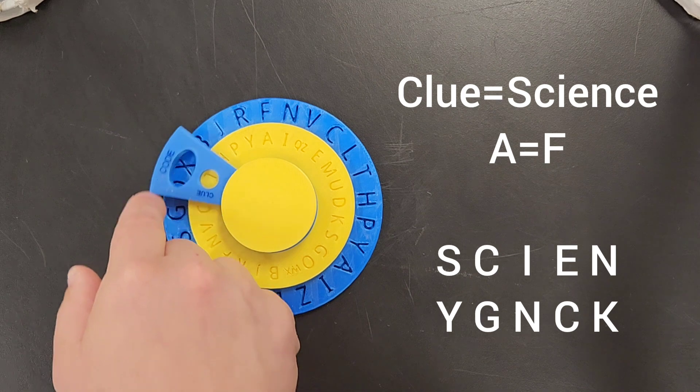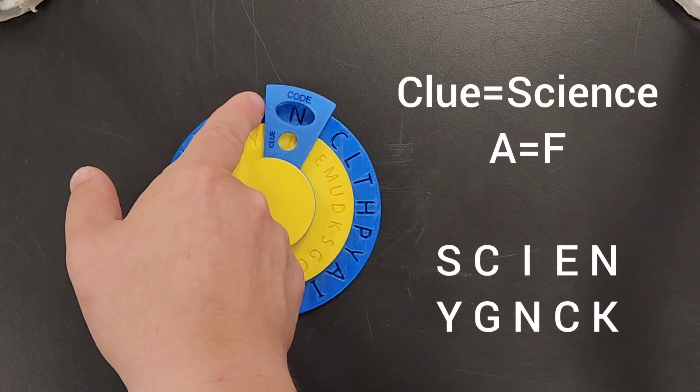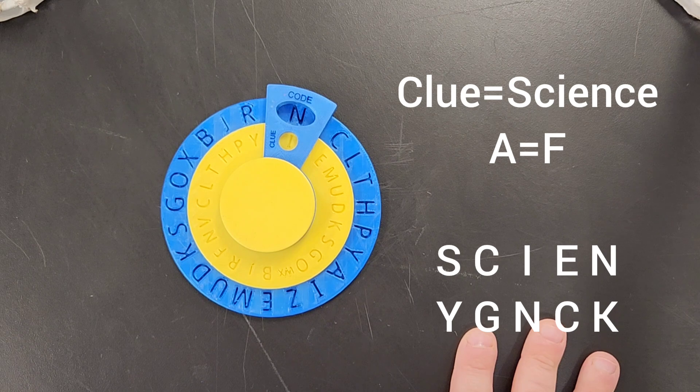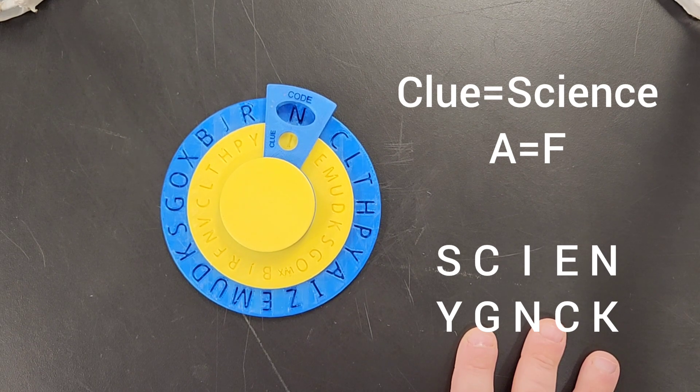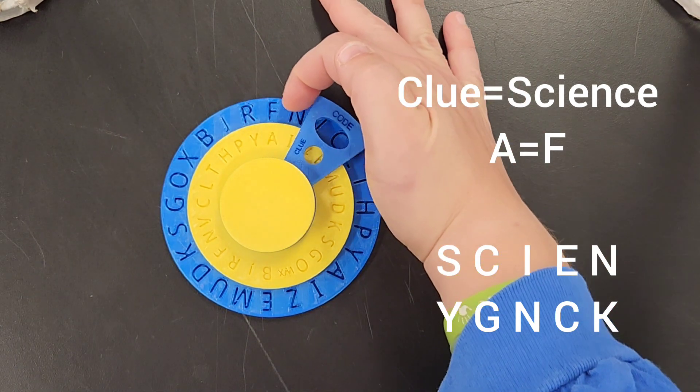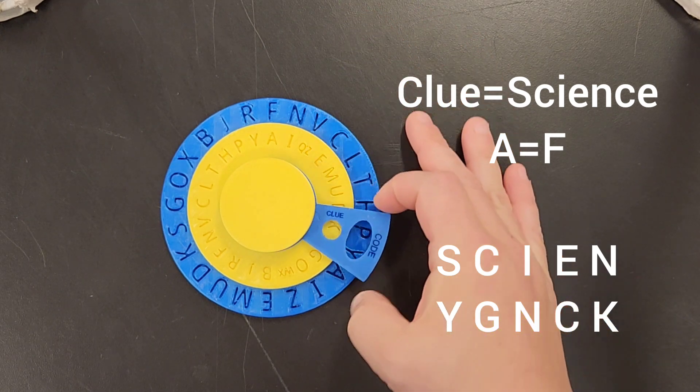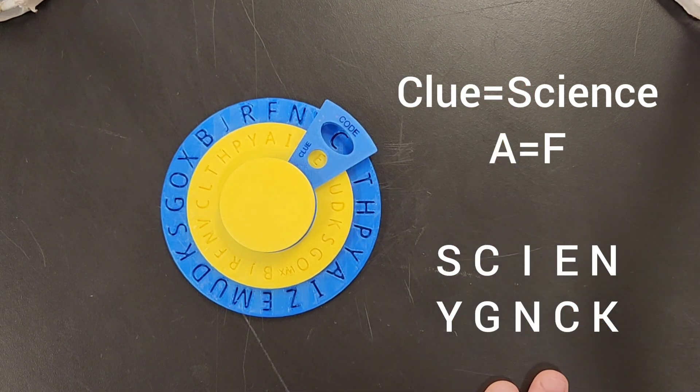S, C, I. I equals N. So we got Y, G, N. And then we're going to E. Where's the E on this guy? Here it is. E equals C.